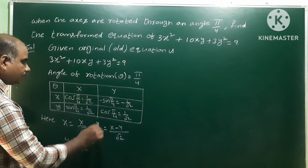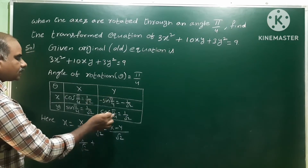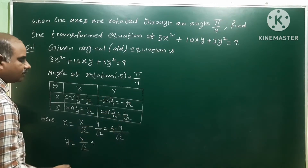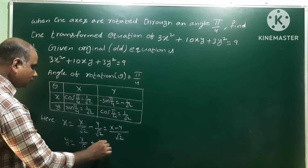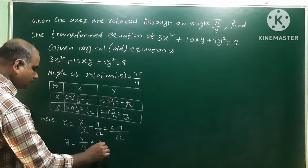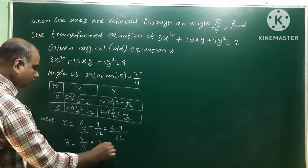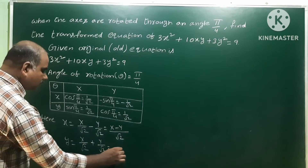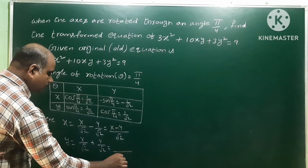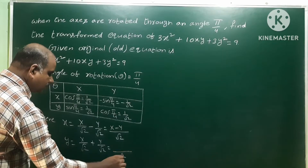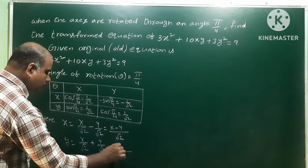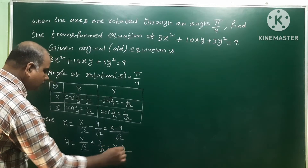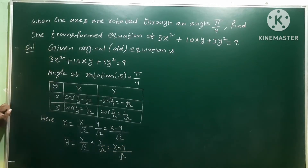And small y = X·sinθ + Y·cosθ = X·(1/√2) + Y·(1/√2). Both terms have the same denominator, so taking LCM gives small y = (X + Y)/√2. These are the old coordinates x and y expressed in the new system.